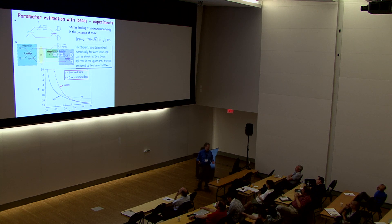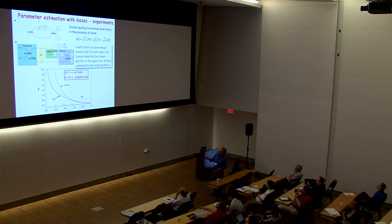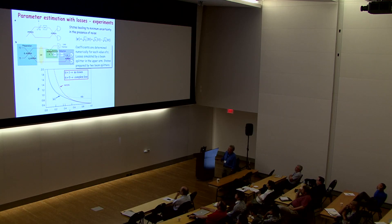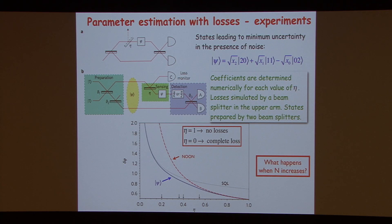The calculation was done for two photons, and as we increase the number of photons it becomes a tough problem to calculate the states and find the best bounds. Our question was: what happens when N increases? Is there a simple way to figure out what these lower bounds are in the presence of decoherence?